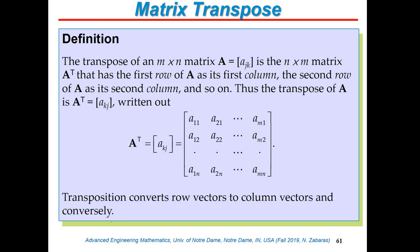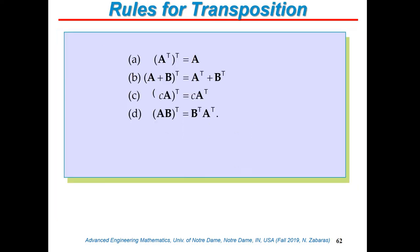The transpose of a matrix exchanges elements across the diagonal: element (i,j) becomes element (j,i). A key property: the transpose of AB is B-transpose times A-transpose — note the reversed order. This is extremely fundamental. I won't prove it, but everything we've discussed is sufficient to prove it — it could be assigned as homework.